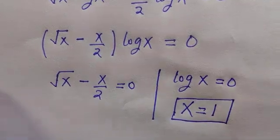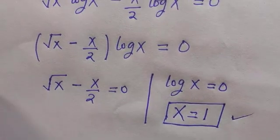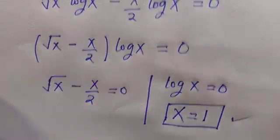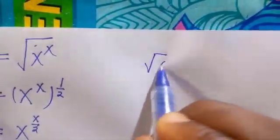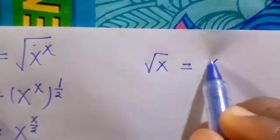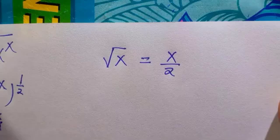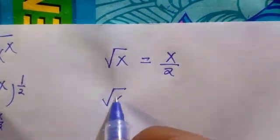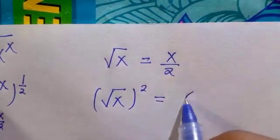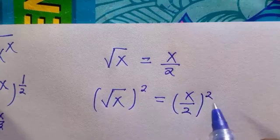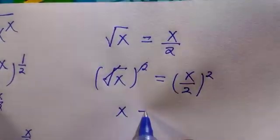To see the other solutions, we solve this. We transfer minus x over 2 to the right hand side, then we have root x equals x divided by 2. The next thing is we take the square of both sides to eliminate the root. Then we have root x squared equals x over 2 all squared. The square and the root cancel, then we have x equals